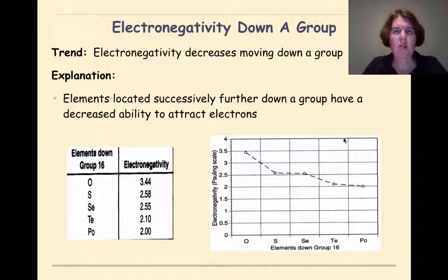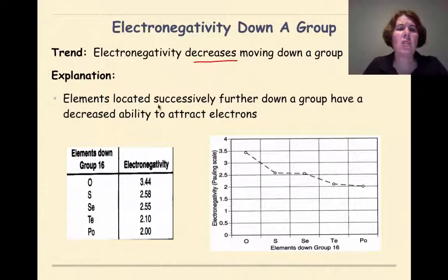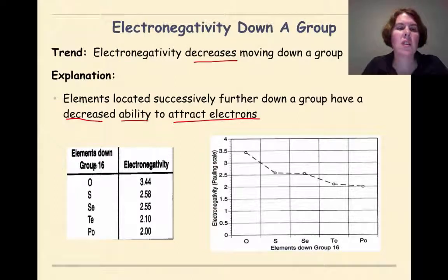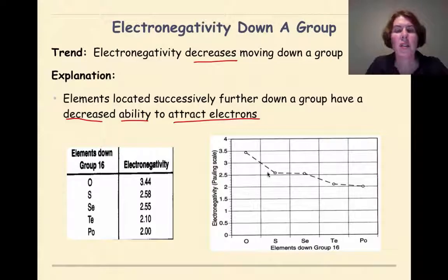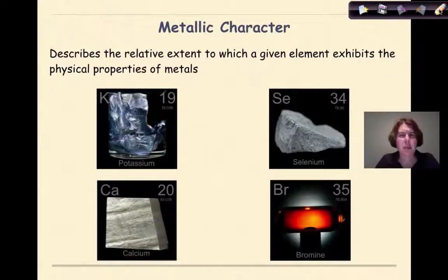Now let's look at electronegativity down a group. The general trend is that electronegativity will decrease moving down a group. The explanation is that elements located successively further down a group have a decreased ability to attract electrons. Looking at the data going from oxygen to polonium, the electronegativity is pretty high for oxygen at 3.44, but as we go down the group, polonium has an electronegativity of 2. The general trend shows that electronegativity decreases as we move down the group.